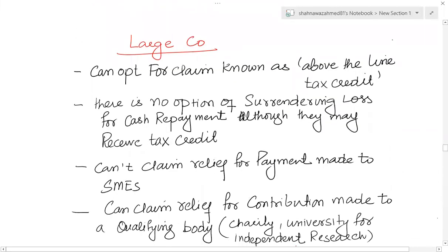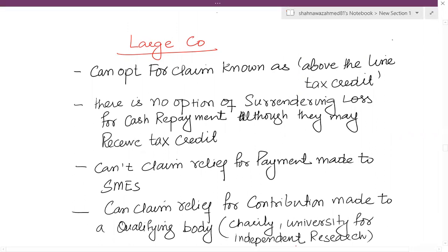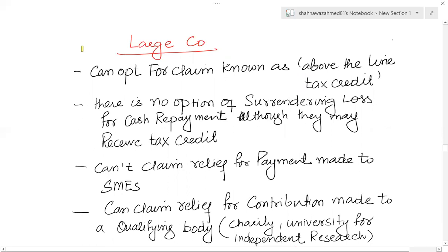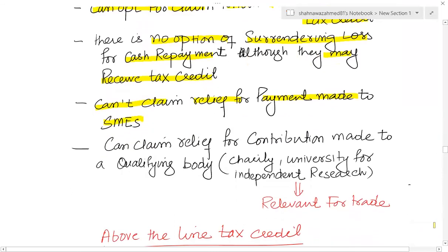Now let's talk about the treatment for a large company. A large company can opt for a claim known as above-the-line tax credit. There is no option of surrendering a loss for cash repayment, although they may receive a tax credit. Large companies can't claim relief for payments made to SMEs.